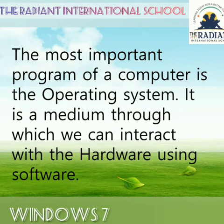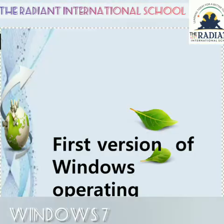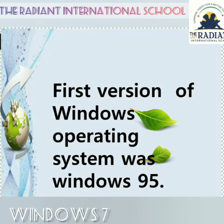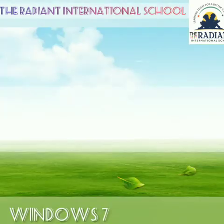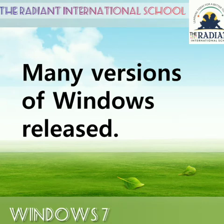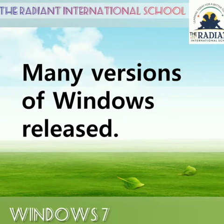The most important program of a computer is the operating system. It is a medium through which we can interact with the hardware using software. The first version of the Windows operating system was Windows 95. Then many versions of Windows have been released, and Windows 7 has become very popular because of its different and upgraded features.